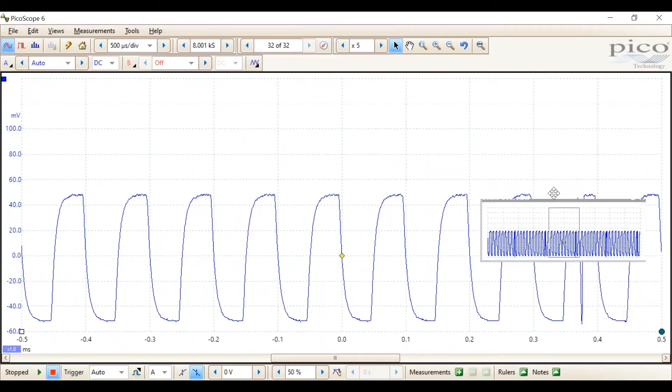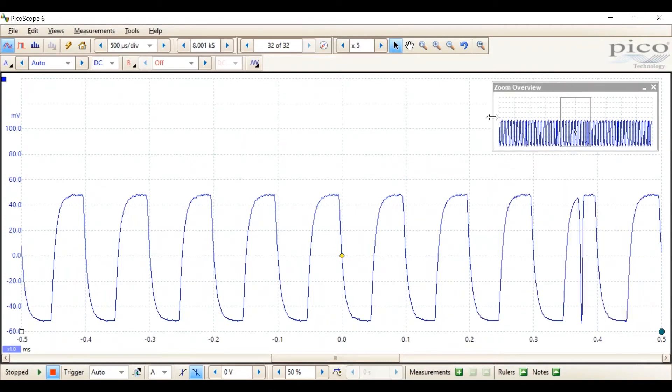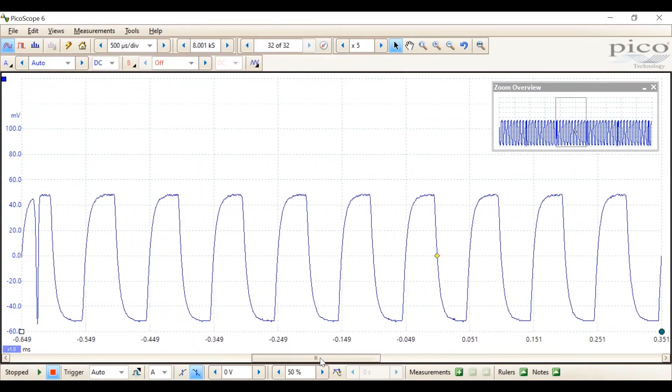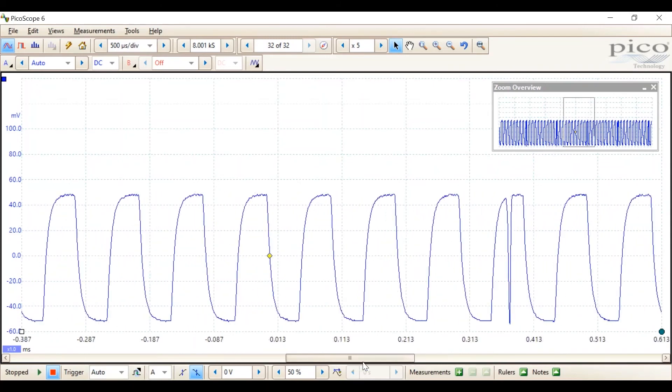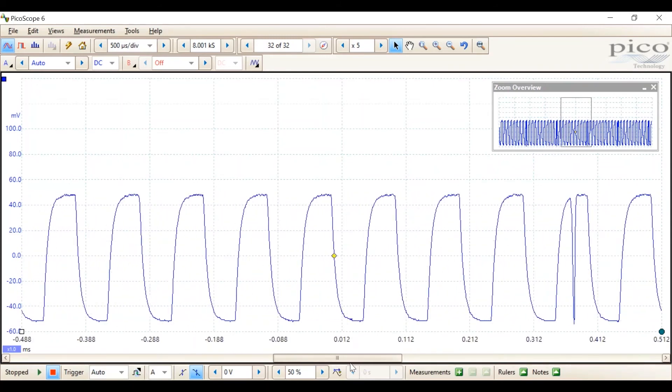And I'm going to zoom in using the horizontal zoom control about five times. So, here you can see this is the zoom overview showing the full acquisition. And in the box is what we can see on the display. We can move through that.